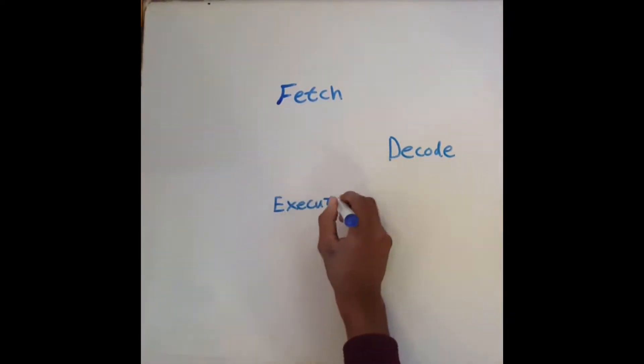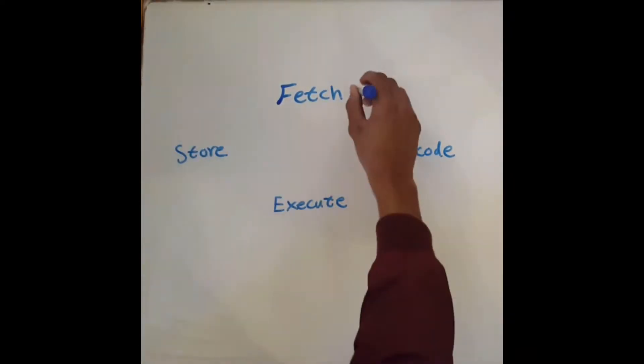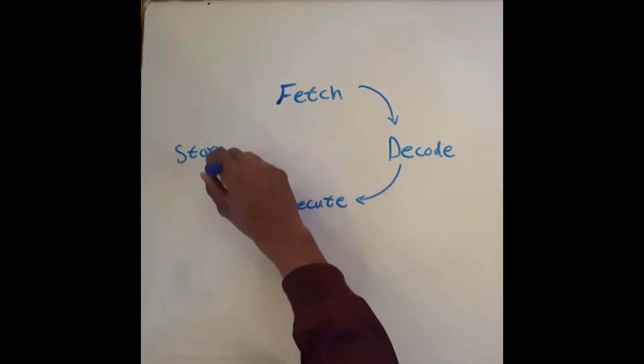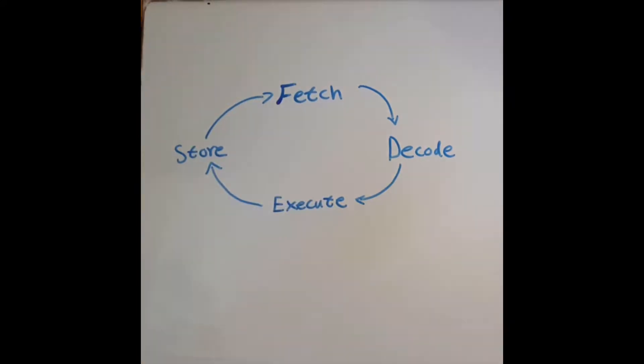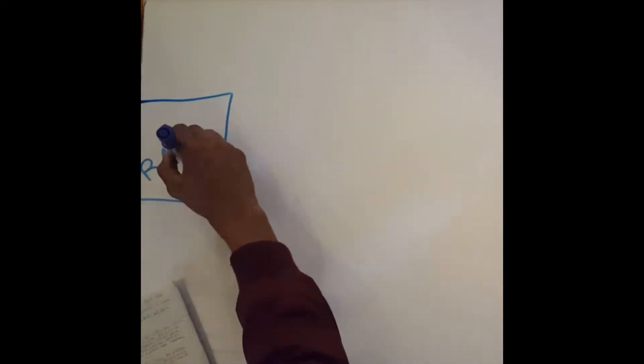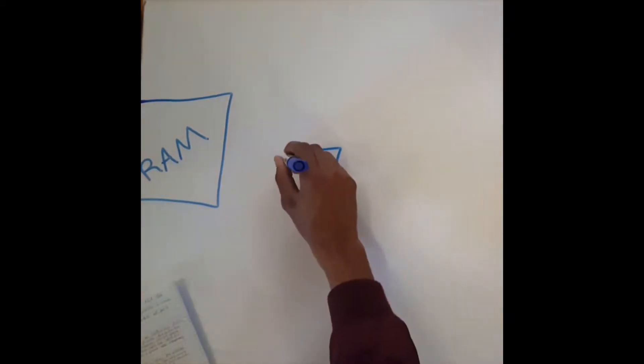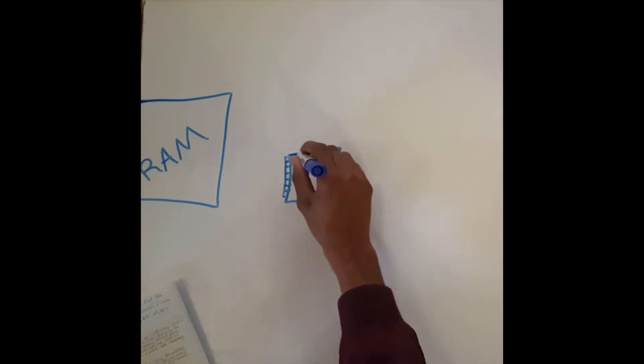The machine instruction cycle, also known as the fetch-execute cycle, is the process in which the computer is able to complete every instruction it is given.